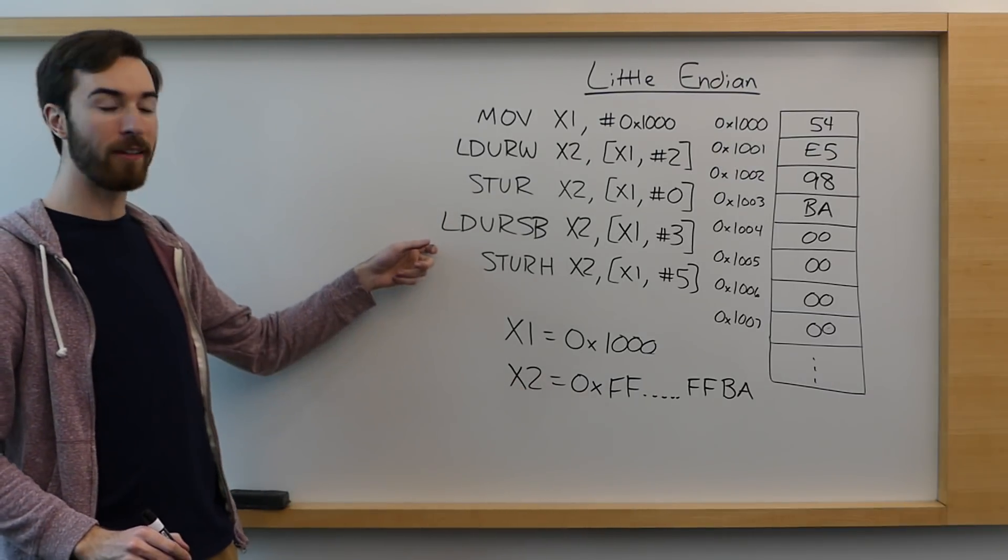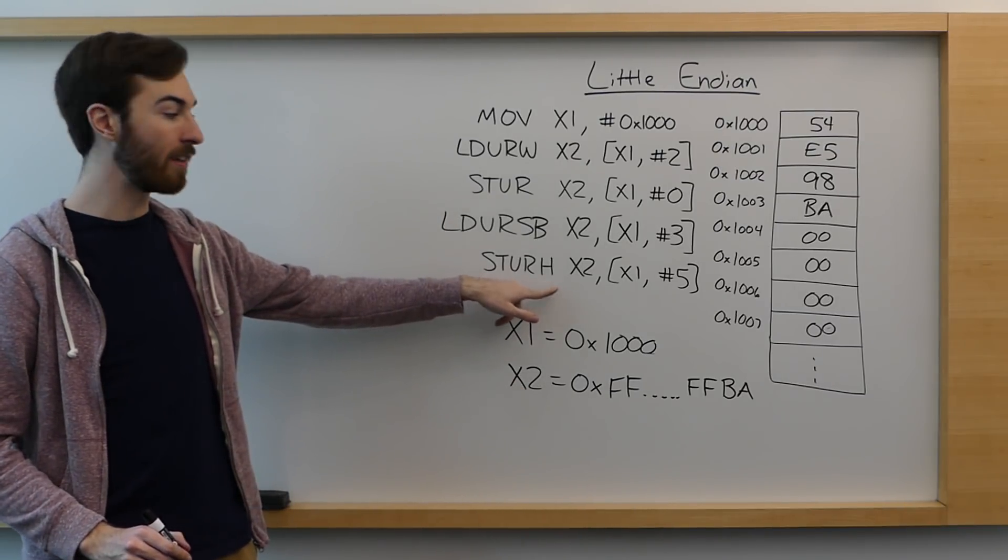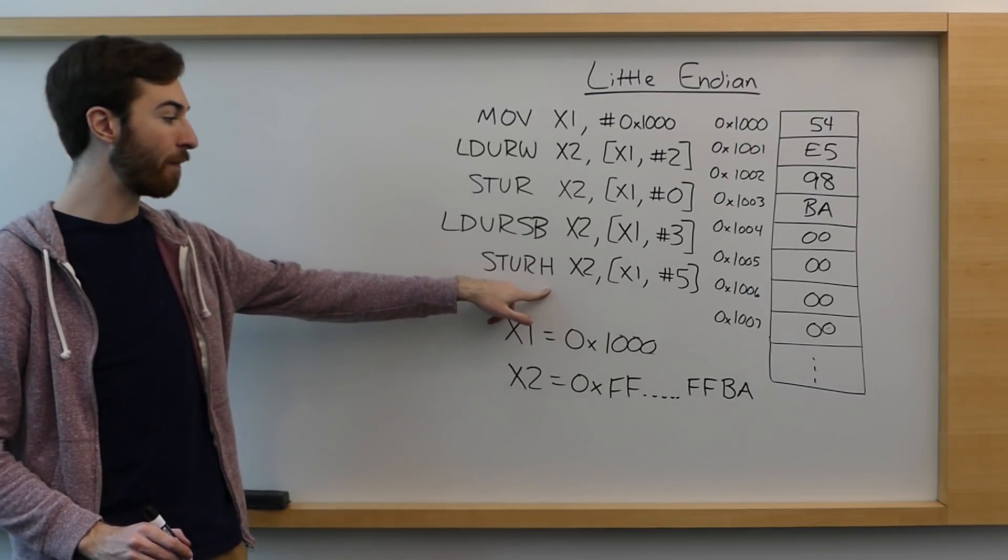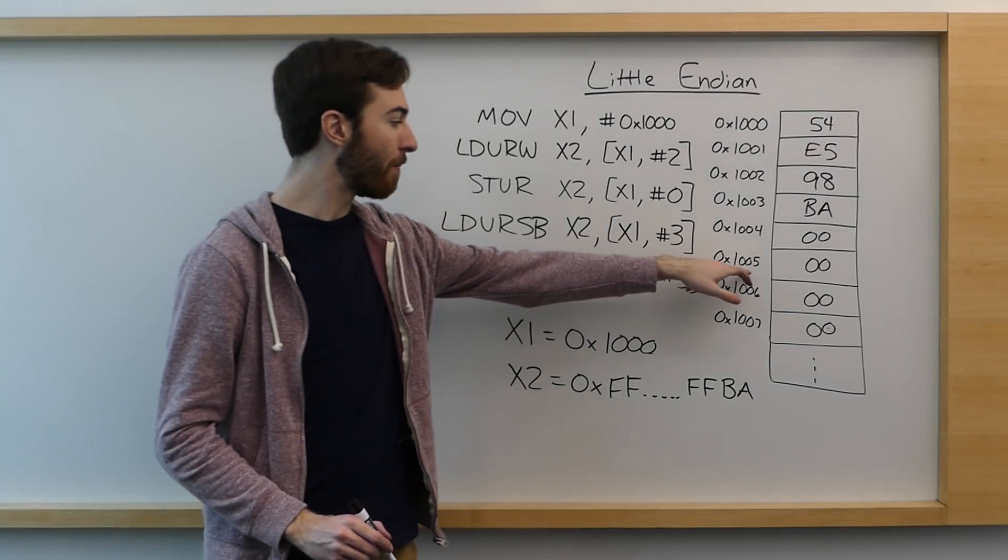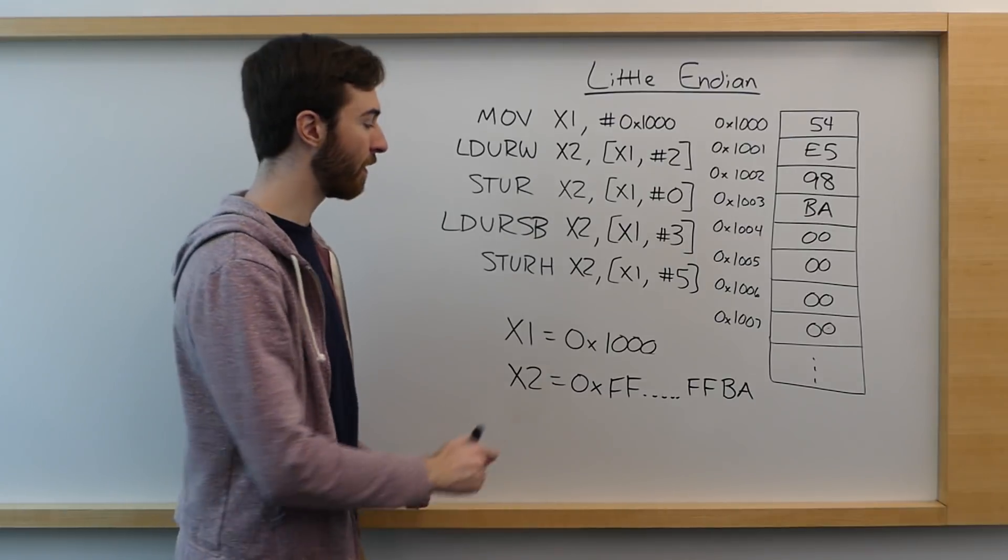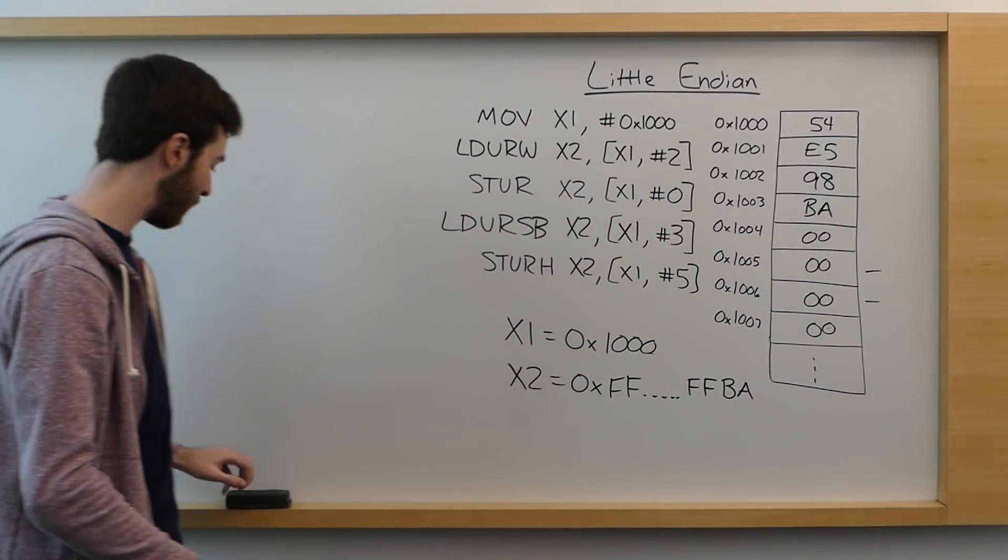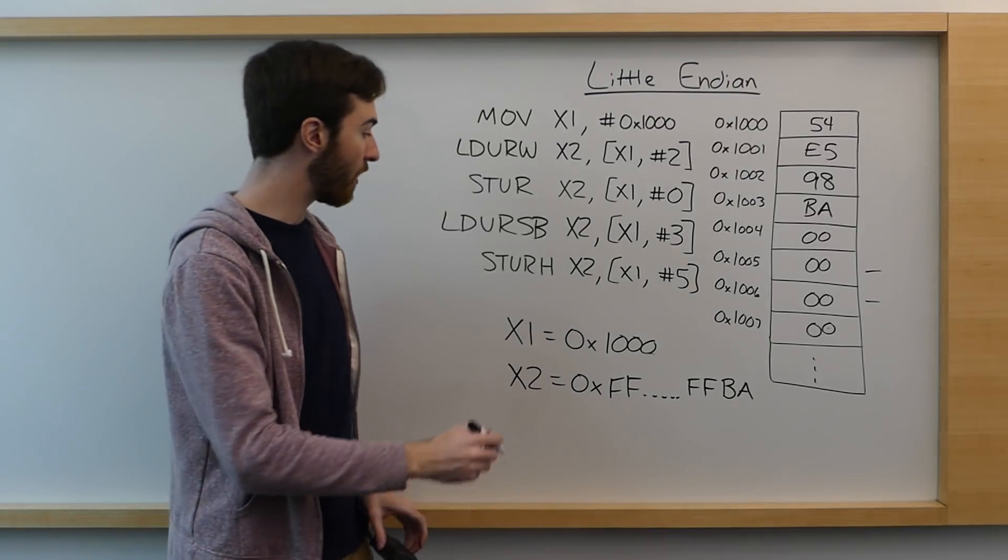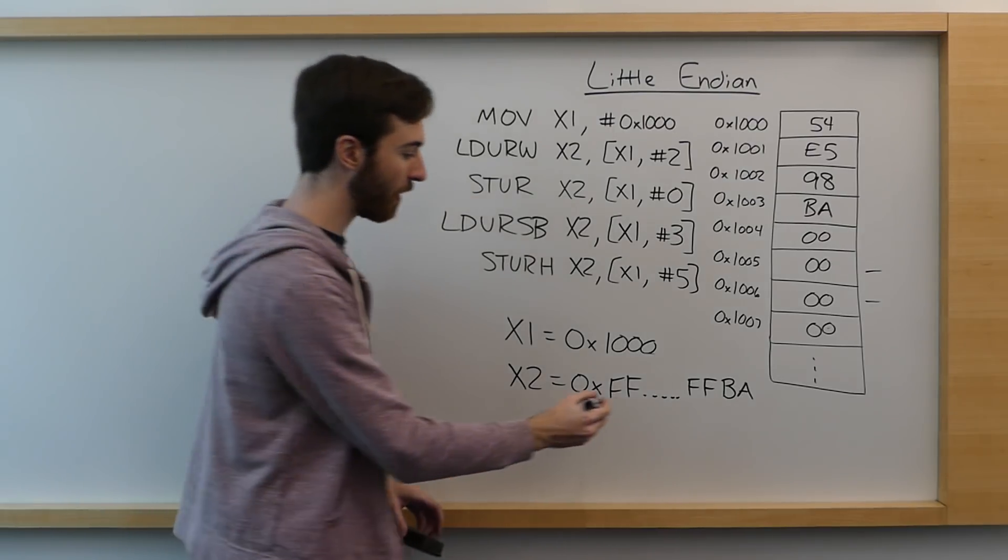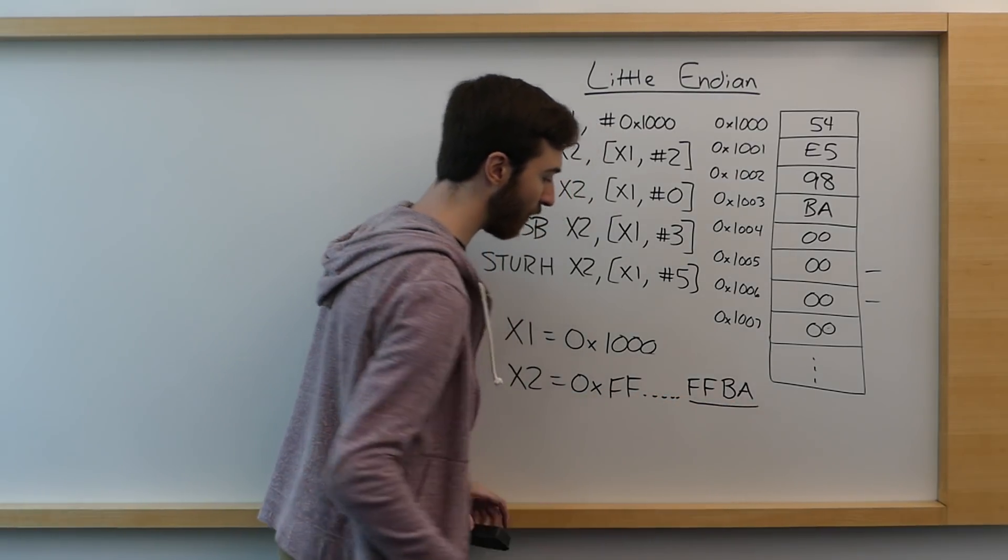And if we move on to the final instruction, the storing command, we're storing two bytes here, a half word, and we're starting at memory address 1005 and going down. So we'll be filling in these two slots in memory.